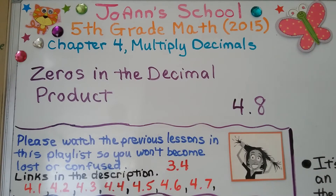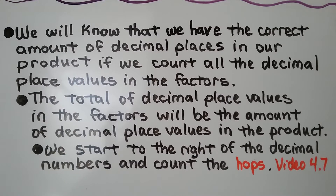Lesson 4.8: Zeros in the Decimal Product. We will know that we have the correct amount of decimal places in our product if we count all the decimal places in the factors. The total of decimal place values in the factors will be the amount of decimal place values in the product. We start to the right of the decimal numbers and count the hops. We learned how to do this in the last video, which is linked in the description.